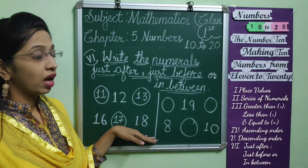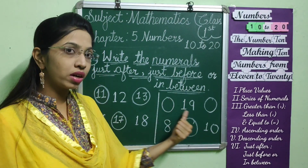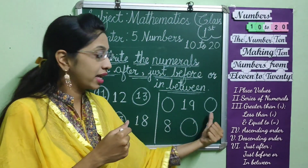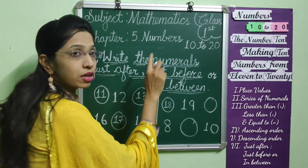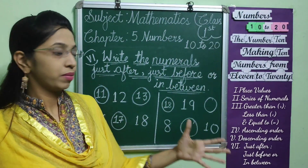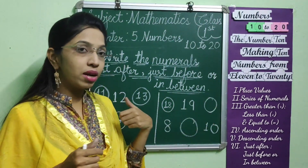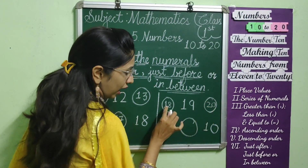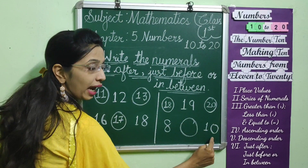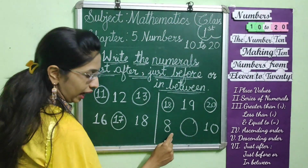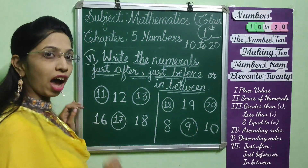Now, what is the just before number of 19? In the series, just before 19 is 18. I am saying just before — not any number before, but the immediately preceding one. So, you write 18. Just after number 19 is 20. So the series is 18, 19, 20. Last example: in between 8 and 10, what is the number? The very next number after 8 is 9. So, 8, 9, 10 — and 9 is the in-between number.